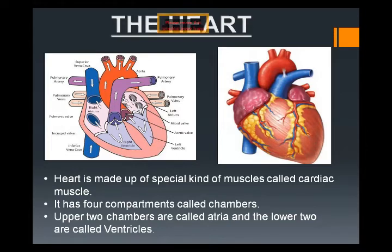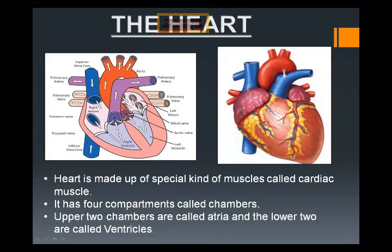The heart is made up of a special kind of muscle found only in the heart, called cardiac muscles. Cardiac muscles or cardiac tissues are responsible for making the heart. In the internal structure of the heart shown on screen, you can observe there are four chambers. These are the atria — shown in pink — and these are the ventricles.